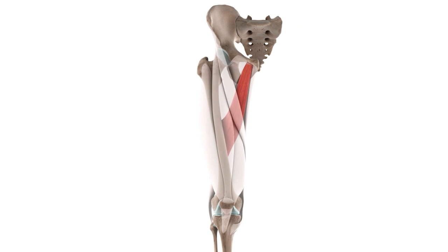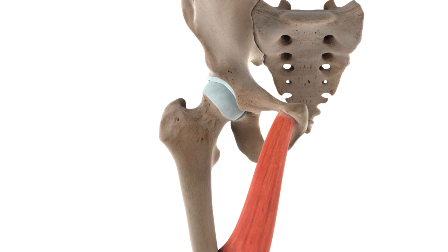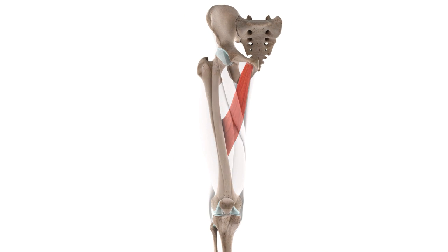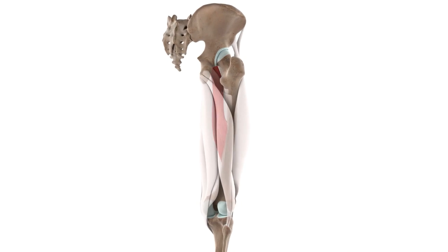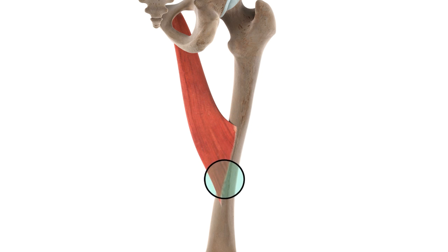Let's take a moment now to look more specifically at the attachment sites of the adductor longus muscle. Zooming in at the origin, we see that the muscle originates from the anterior aspect of the body of the pubis, just inferior to the pubic tubercle. This attachment is particularly prone to overload during exercise and often is a cause of sports-related groin injury or strain. The adductor longus muscle continues posterolaterally from its origin into a large broad belly before inserting into the middle third of the linea aspera, which is the rough longitudinal ridge which runs along the posterior surface of the femur.